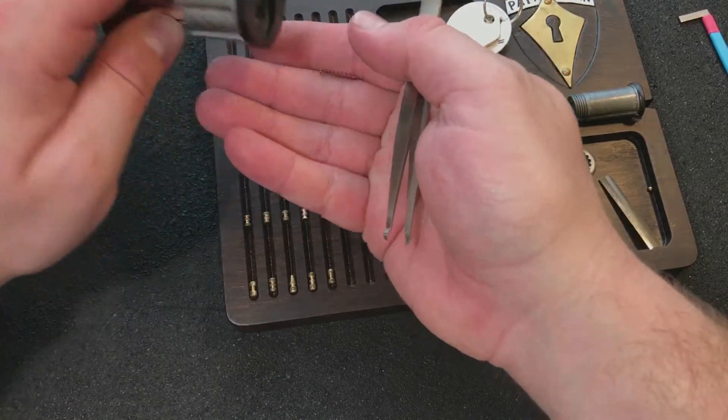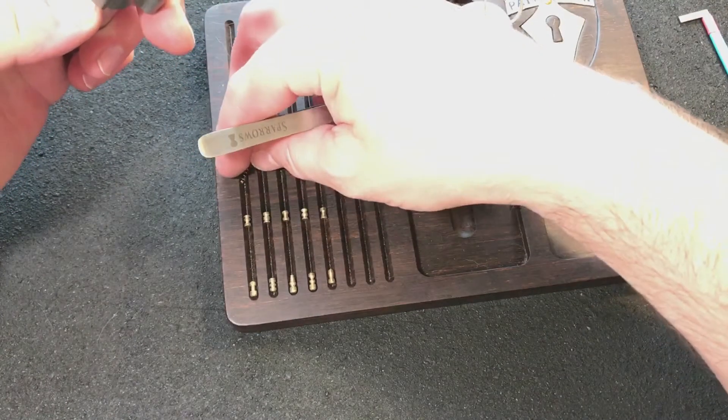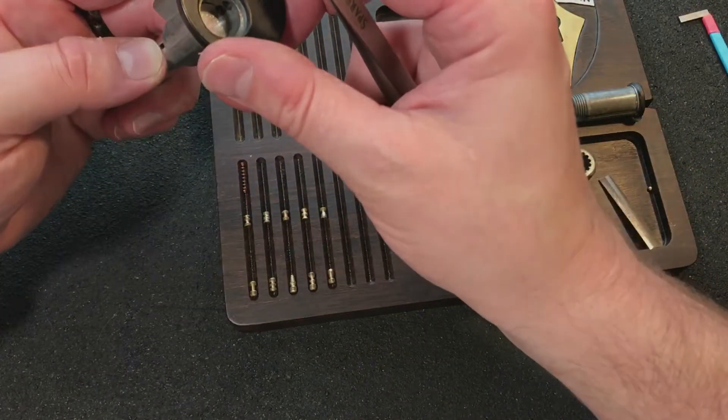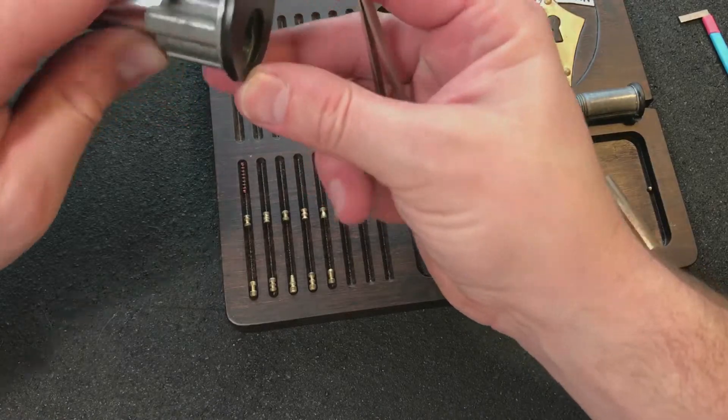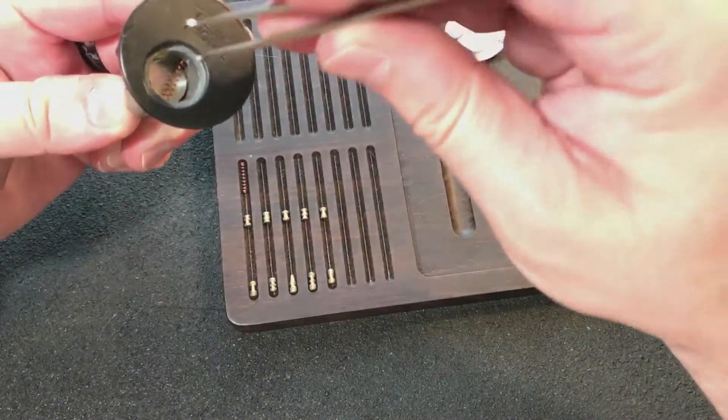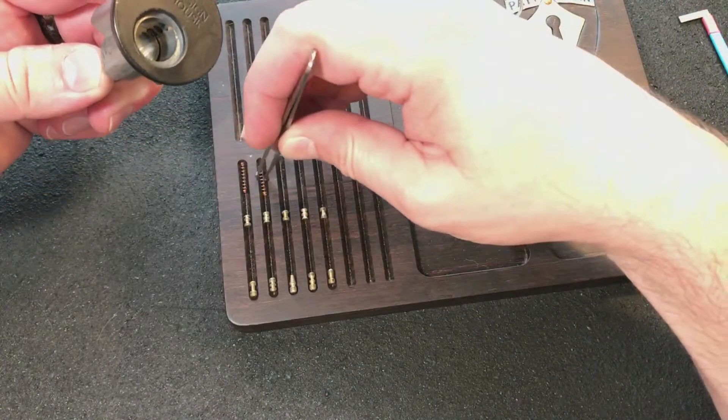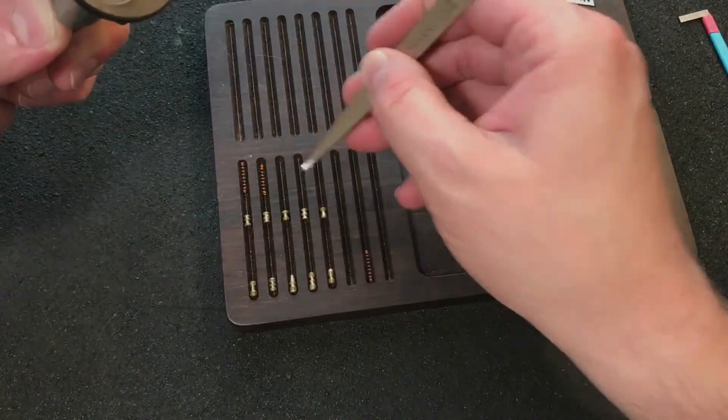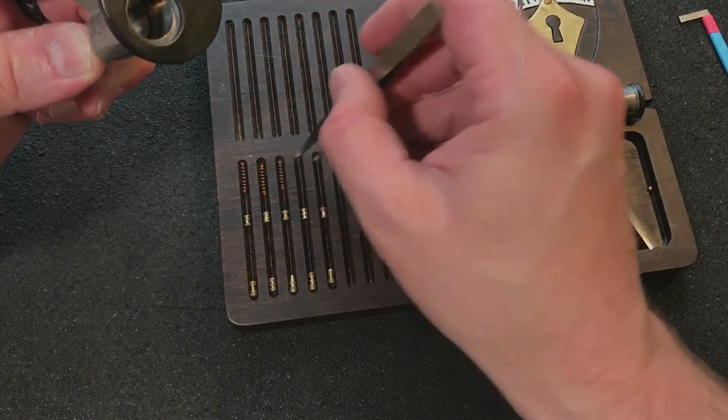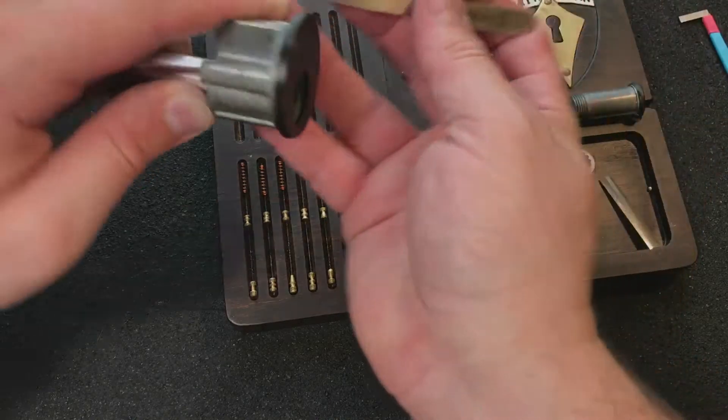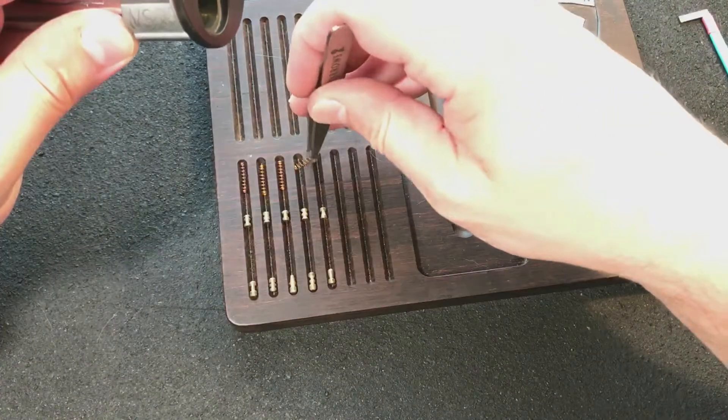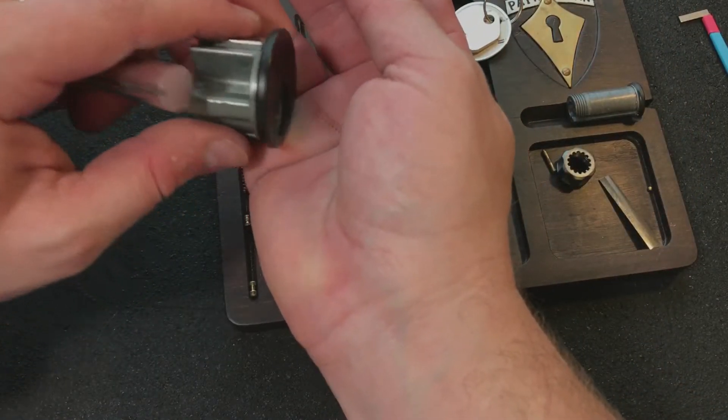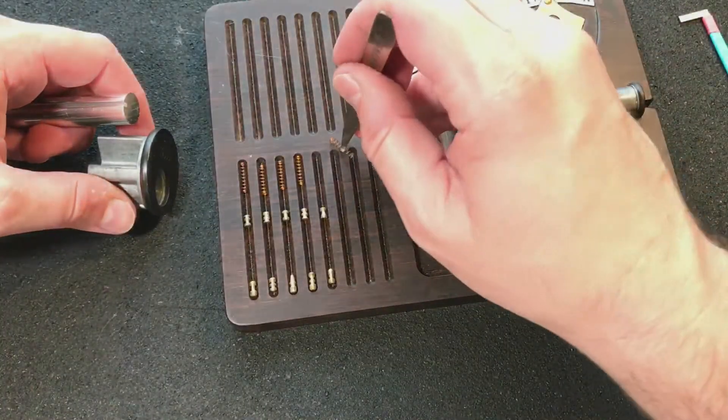Let's get these springs out of here. One, looks like a copper spring. Two, also a copper spring. Three, copper spring. Four, also copper. And five, a copper. All five are copper.